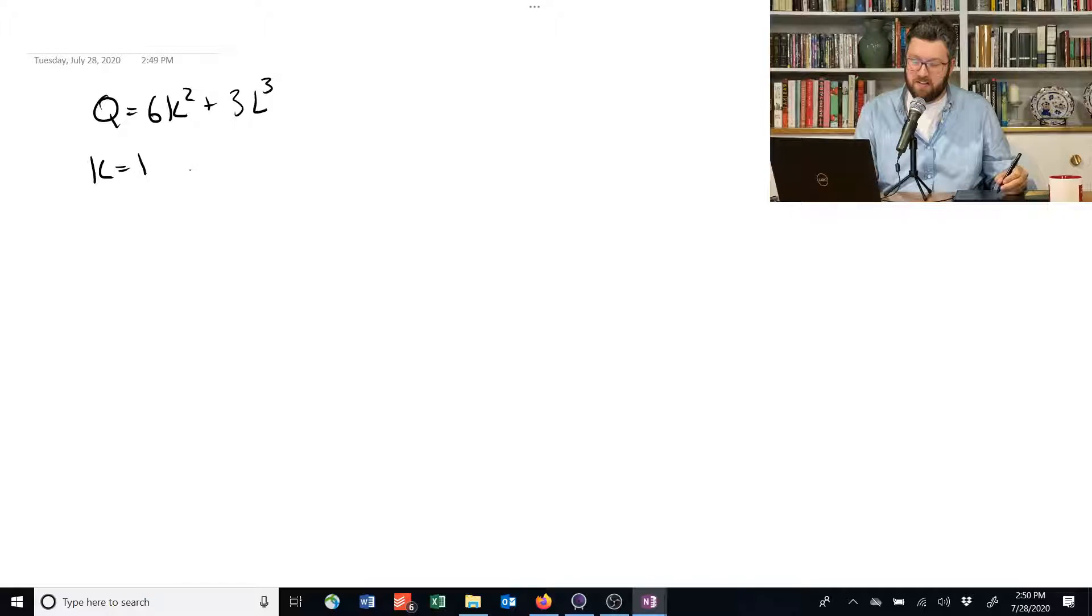The easiest number is always 1, because that's super easy to calculate in almost all cases. And then we'll see what happens when we change it to 2. So if we have k equals 1 and l equals 1, we're going to have q is equal to 6 plus 3, because 1 squared and 1 cubed is just 1.